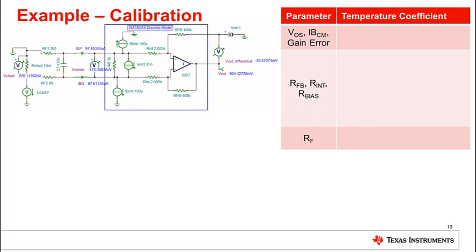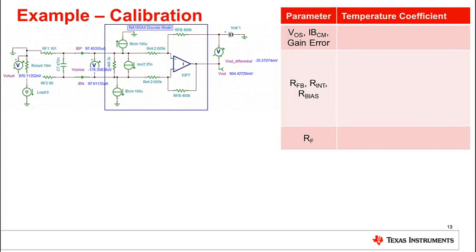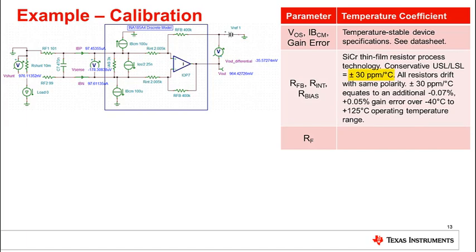An engineer can consider calibrating the circuit. However, the variation of the circuit parameters over temperature must be considered. The datasheet specifications for offset voltage, common mode input bias currents, and the device gain error are usually very stable over temperature, and this can be verified in most datasheets. The temperature coefficient of the internal resistors is not reported in datasheets, but for many devices can be very stable at a maximum plus or minus 30 ppm per degree Celsius, based upon silicon chromium process technology. Given that all the resistors for a single device will drift in the same direction, the error due to temperature coefficient contributes a small gain error of positive 50 milli-percent to negative 70 milli-percent over the entire operating ambient temperature range of the INA185A4. The temperature coefficient of the filter resistors RF will of course depend upon the component chosen.